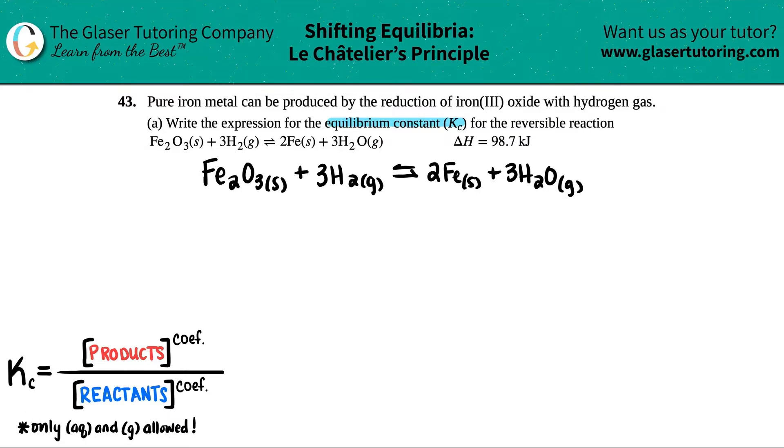The Kc equation is this one on the bottom left-hand side. It's a general equation. It's basically the concentration of the products divided by all the concentration of the reactants, and then you just have to raise each one of them to the coefficients. But keep in mind that only aqueous and gases are allowed in this expression.